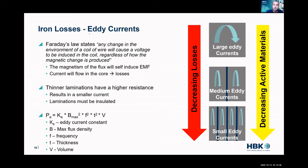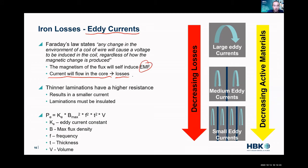The next factor we have is iron losses, and in those iron losses we have eddy currents. Faraday's law states that any change in the environment of a coil of wire will cause a voltage to be induced in the coil, regardless of how the magnetic change is produced. So if we turn a chunk of iron into a magnet, we're passing flux through it. Since iron is a conductor, it's going to have a self-induced voltage, and because iron has a resistance — V equals IR — we're going to create a current. Current will flow in the core because of that induced EMF, and we're going to create losses.